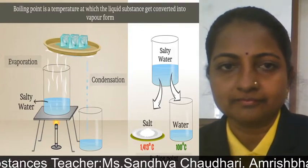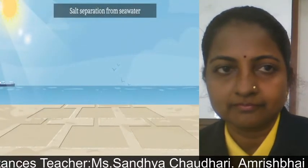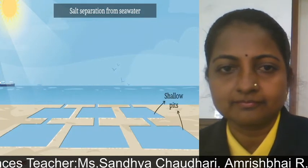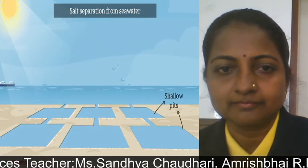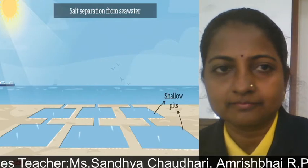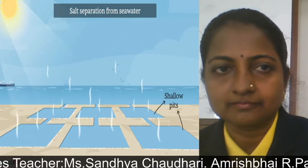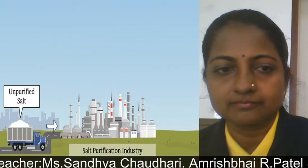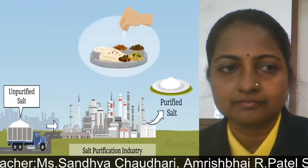We use this method to separate salt from seawater. Seawater is captured in shallow pits. The sunlight heats the water and slowly the water gets evaporated. After complete evaporation of water, we get salt free from water. It is then further purified to be used in our food as common salt.